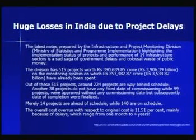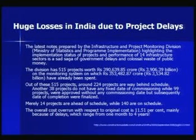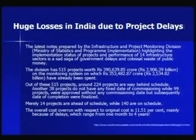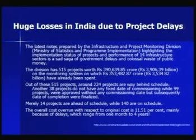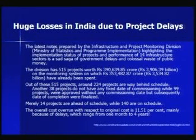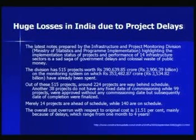There are huge losses. The government has an agency that tracks big infrastructure projects in the country, and they have been tracking 515 projects in implementation involving 3,90,000 crores of money invested. Out of these, 224 projects are behind schedule and only 14 projects are on schedule out of 515. Projects running over time and over cost is so common, and there is a lot of money wasted in the process — a huge drain on the country's meager resources.